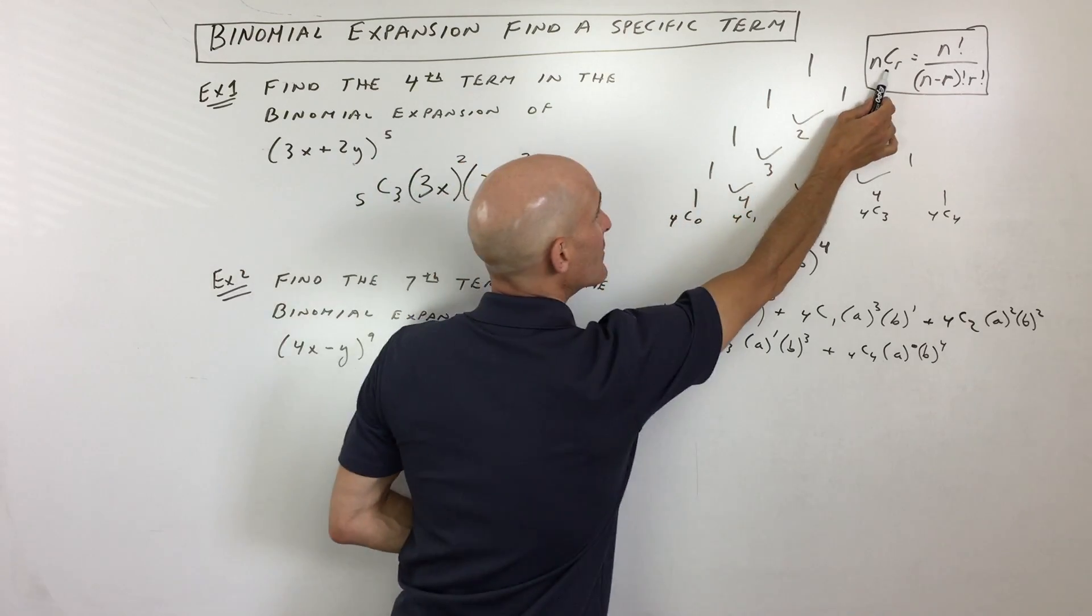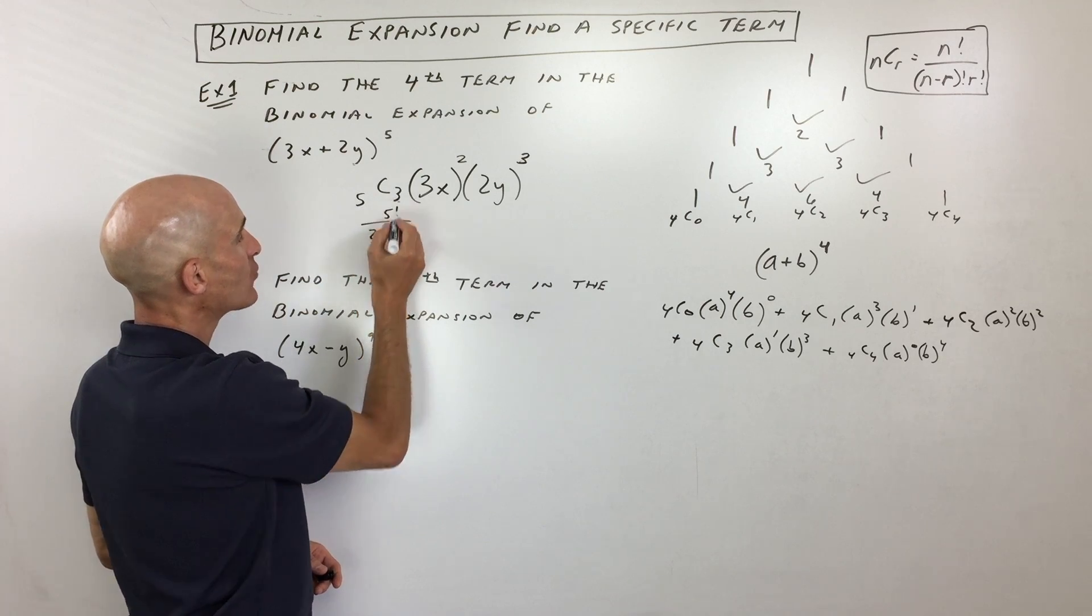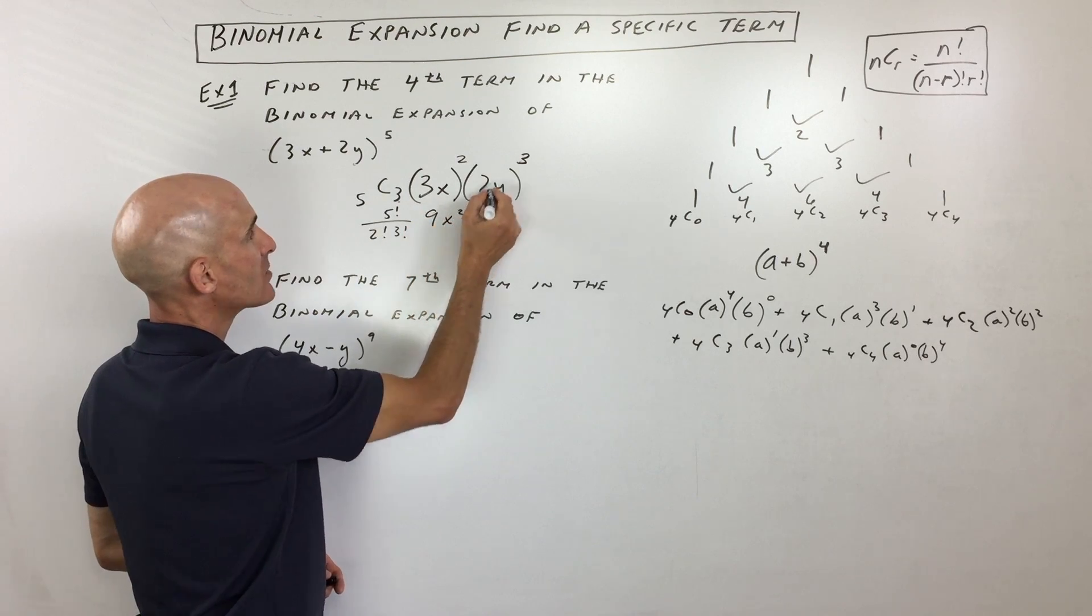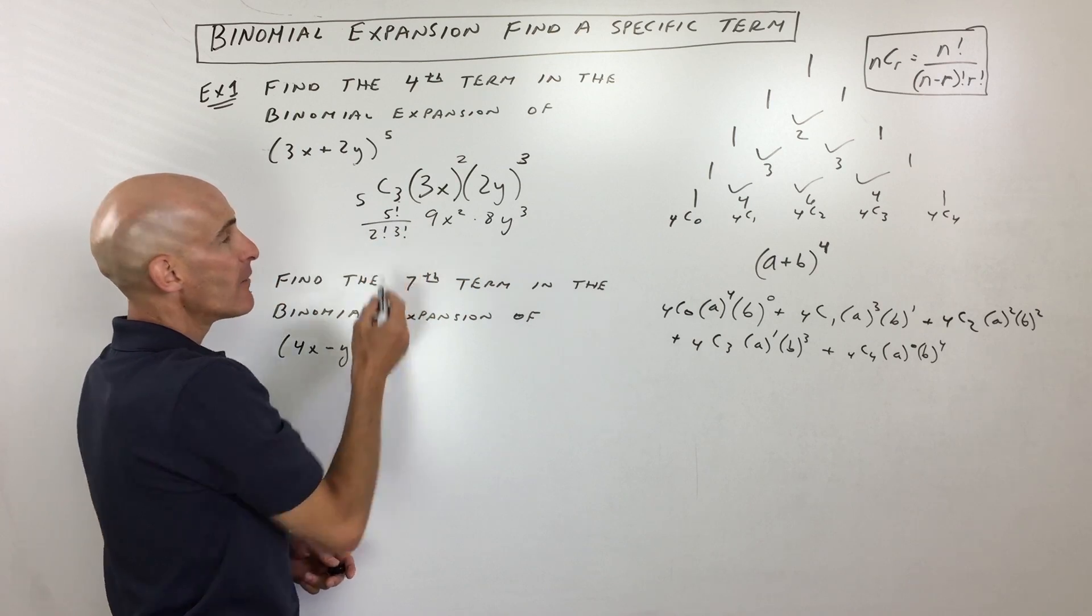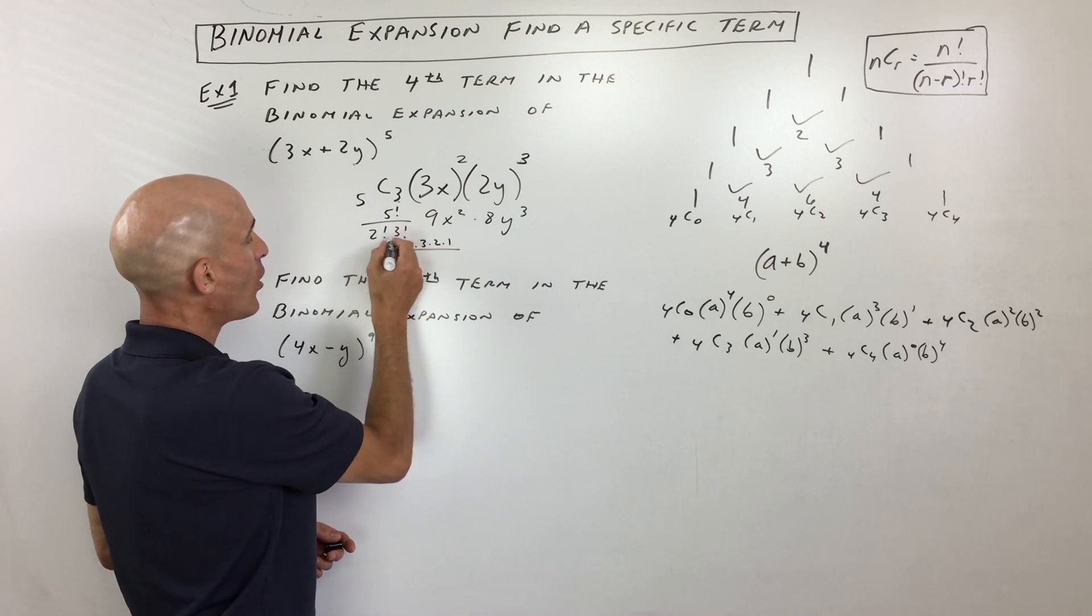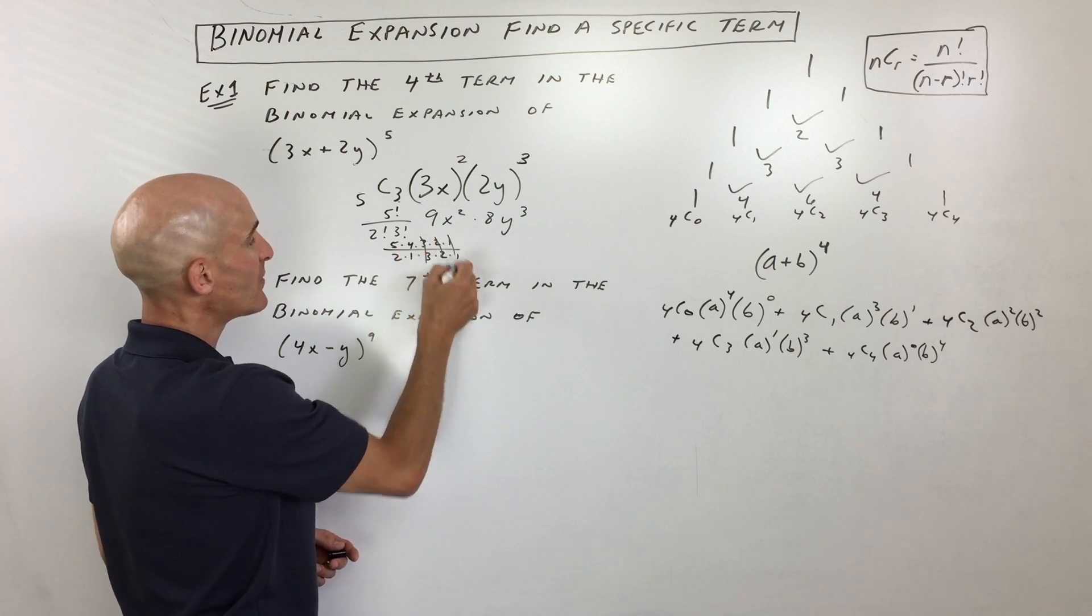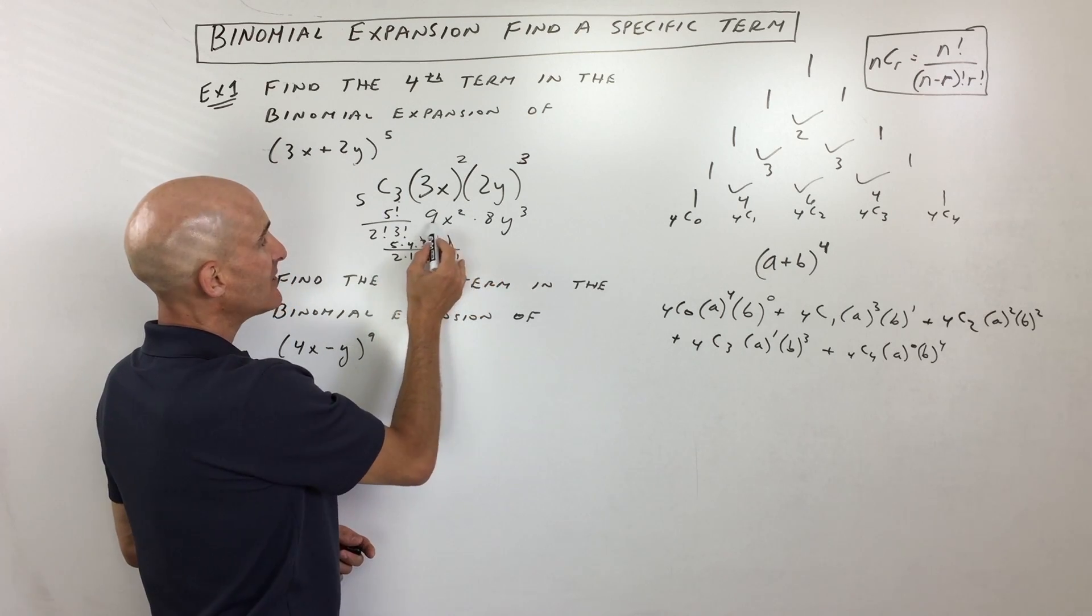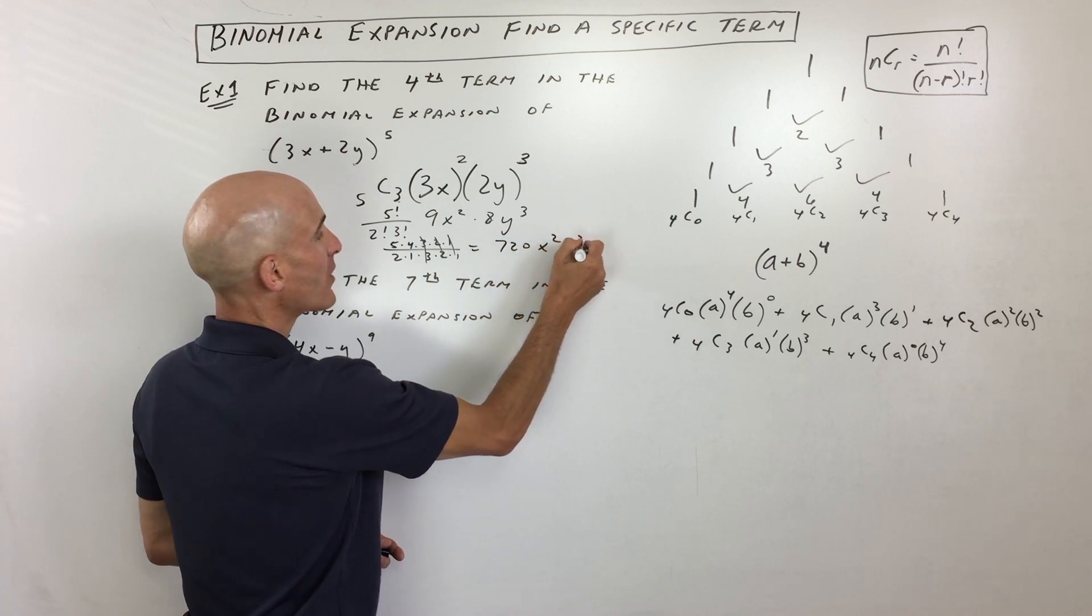So now all we have to do is simplify this down. So 5 choose 3, I'm going to be using this combination formula here. So this is 5 factorial over 5 minus 3, which is 2 factorial, times 3 factorial. And this is 3 squared, which is 9, x squared, 2 cubed is 2 times 2 times 2, which is 8. And now if I simplify this, 5 factorial is what? It's 5 times 4 times 3 times 2 times 1, all over 2 factorial, that's 2 times 1, times 3 factorial, that's 3 times 2 times 1. But you can see those are canceling. This is 20 over 2, which is 10. So I get 10 times 9 times 8 is 72, so I get 720 x squared, y cubed.